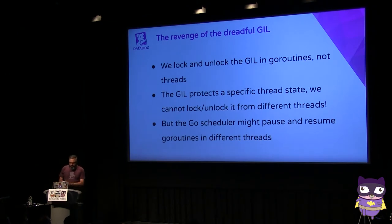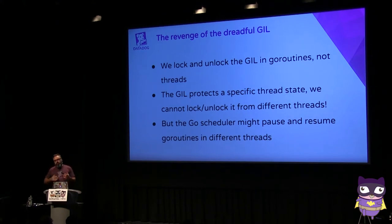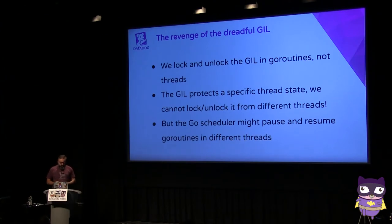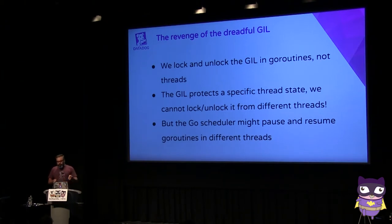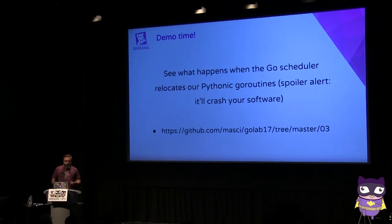So we are good, right? Nope. What we did — we locked and unlocked, handling the GIL from different goroutines — which is not exactly the same as handling it from the same thread. The two different goroutines can actually run on the same thread. The problem is the GIL protects a specific thread. What might happen is two goroutines run, and the Go runtime decides to pause one. You start a goroutine, lock the GIL, then the Go runtime pauses that goroutine and resumes it later on a different thread. At that point, you're unlocking the GIL on a different thread — and this is not going to end well.